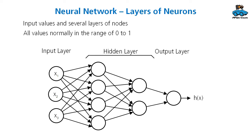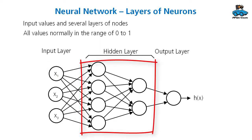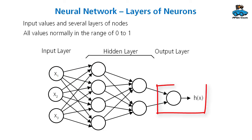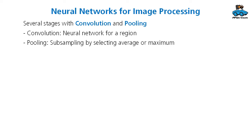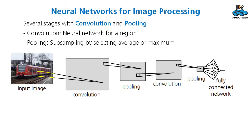Several neurons are combined in a network. You have input values — the information that goes into your network — then hidden neurons in one or more layers, and then the output layer. For image processing, normally several stages are used that combine convolution and pooling. Convolution means that a region of your image is evaluated with a neural network. Pooling means subsampling these values by selecting a certain region and building the average or maximum inside it, thereby reducing the resolution of your information. You do this in several steps and end with a fully connected network.